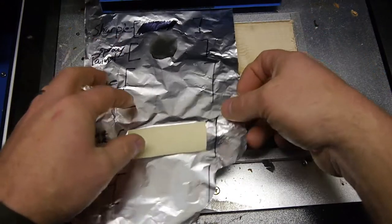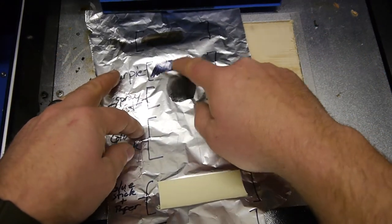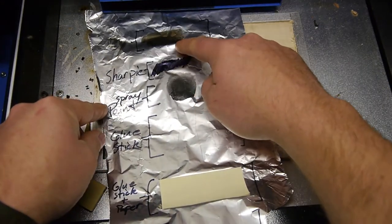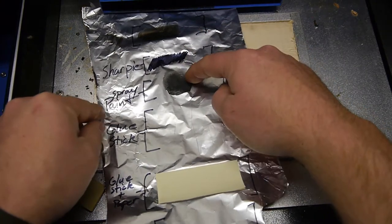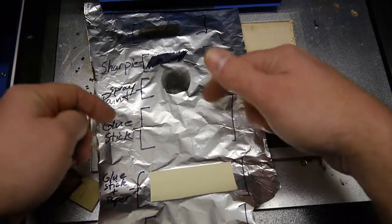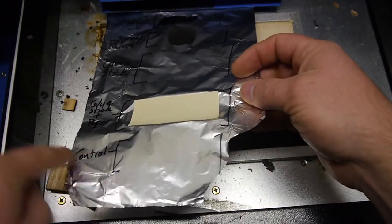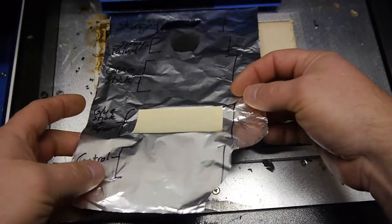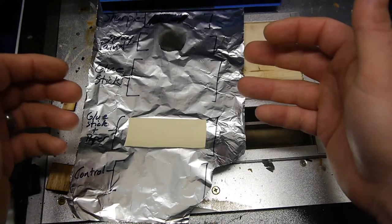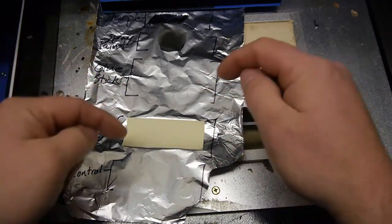Maybe if we were to cover it with like a dry erase marker, a Sharpie, spray paint, glue stick - because heck I had it - and then glue stick with paper on top, and then obviously just plain old aluminum foil. I thought, what if we hit this with the laser and see if it does anything?